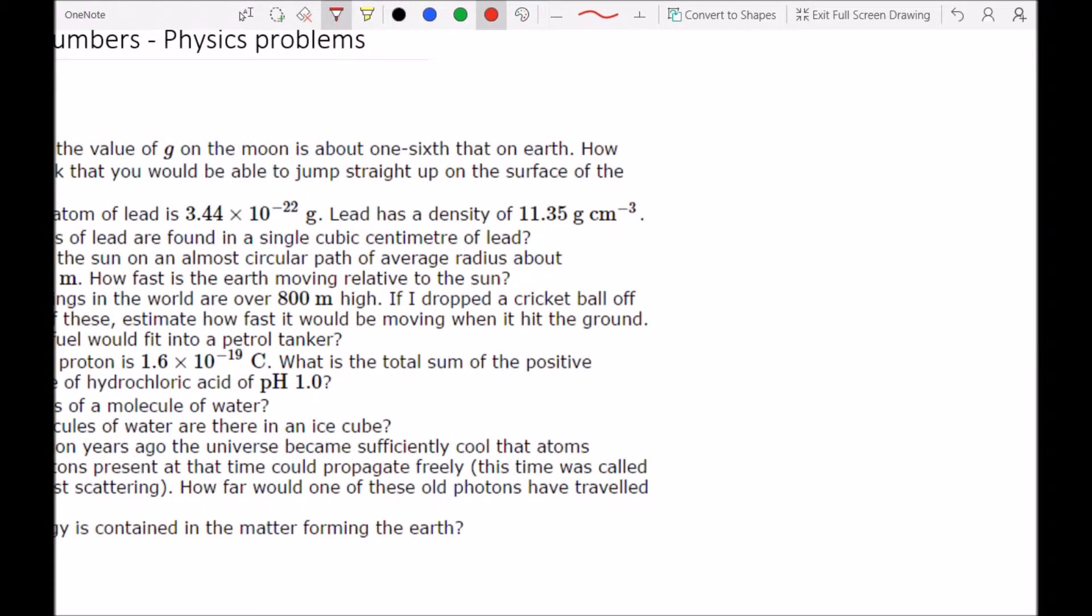So you can use SUVAT equations. If we write out SUVAT, and then look at the things we've got: s is the thing we're looking for, u we don't have, v is zero because you're reaching a maximum, a is going to be a variable that we're going to change, and t will just give it the algebraic value t.